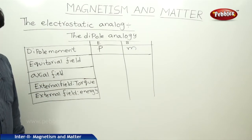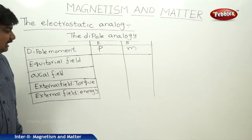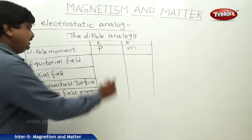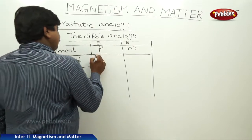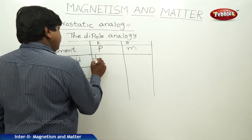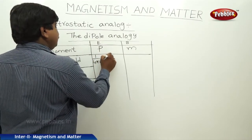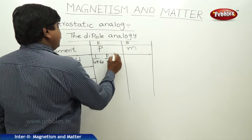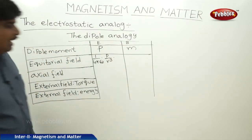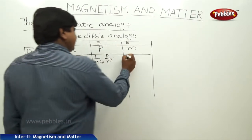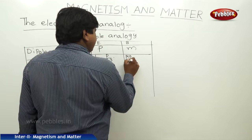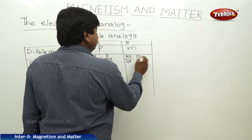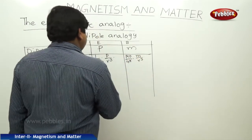The equatorial field, that means the electric field on the equatorial line, is given by 1 by 4 pi epsilon naught into P by R cube. But in magnetic fields, it is represented by mu naught by 4 pi into M by R cube.